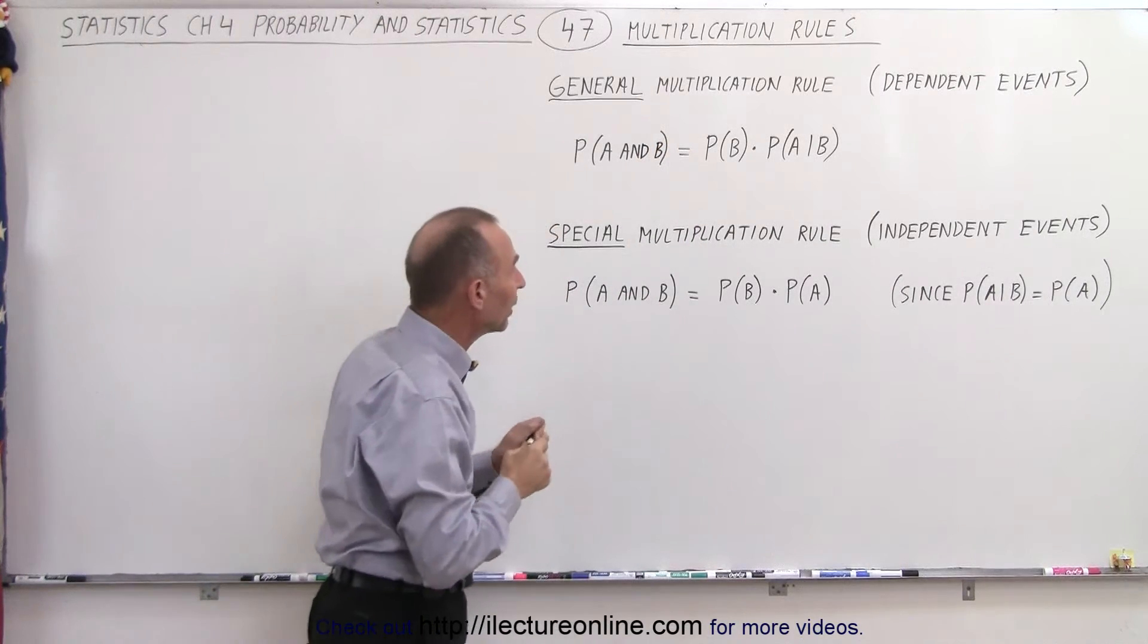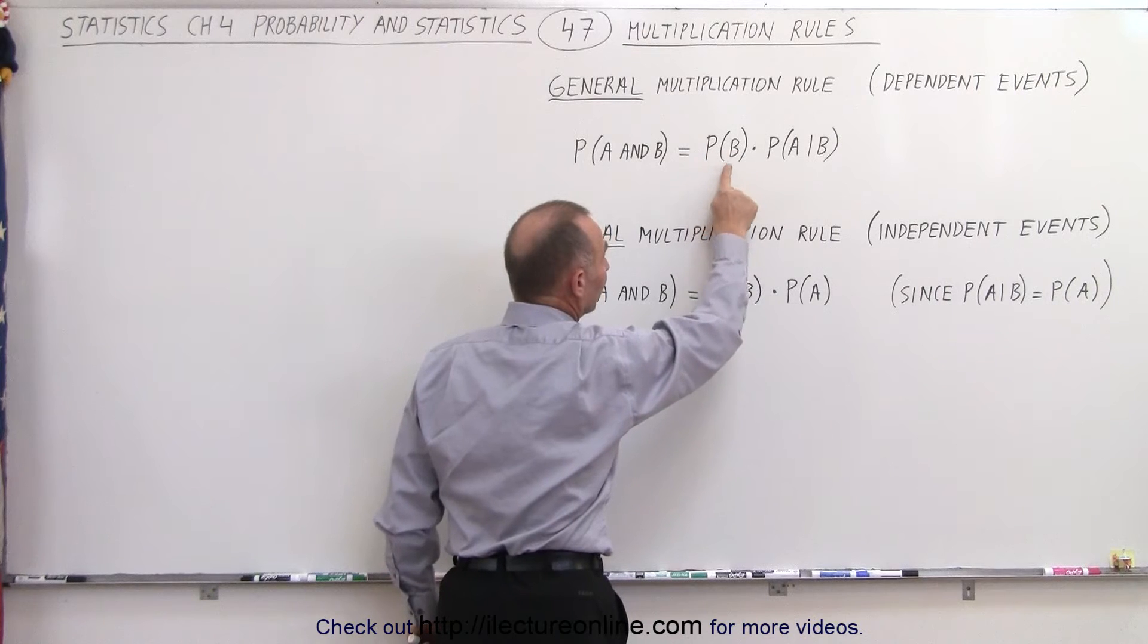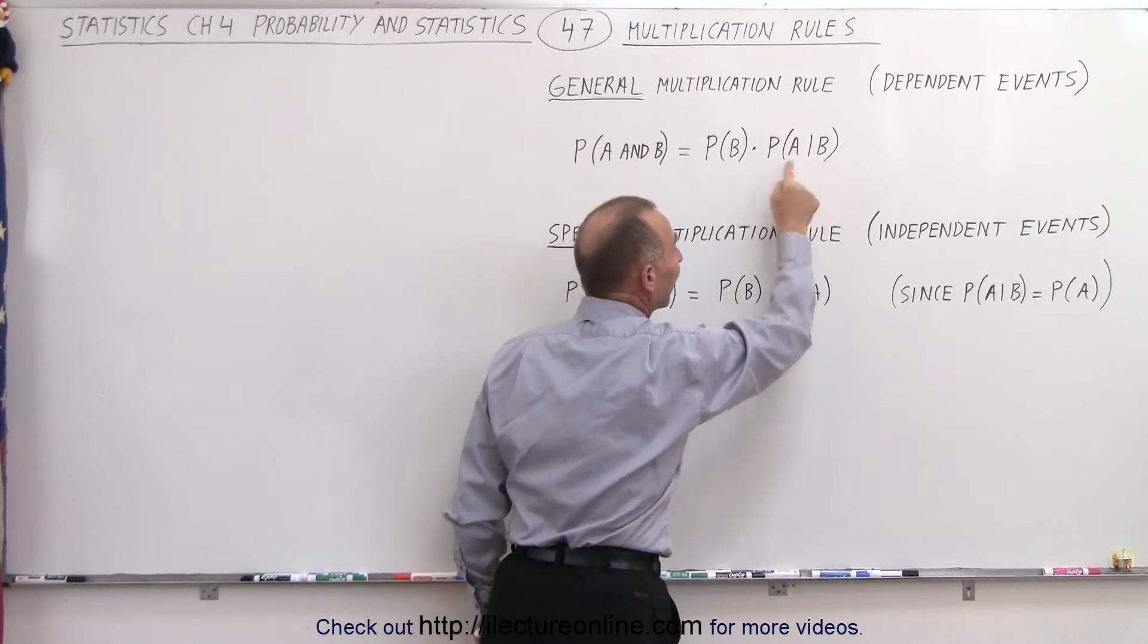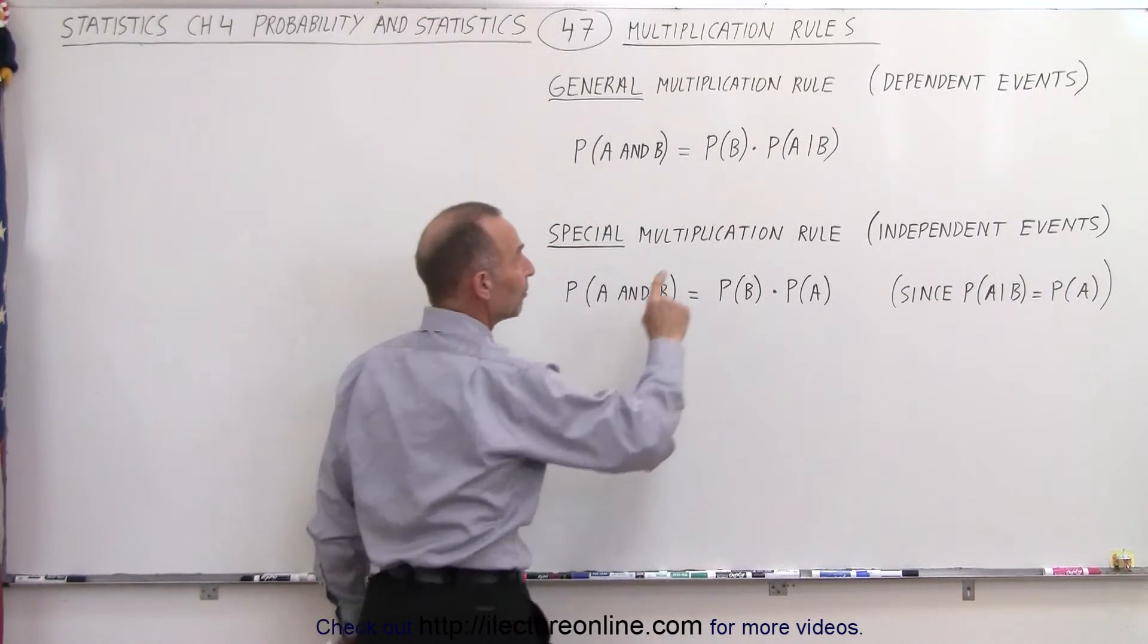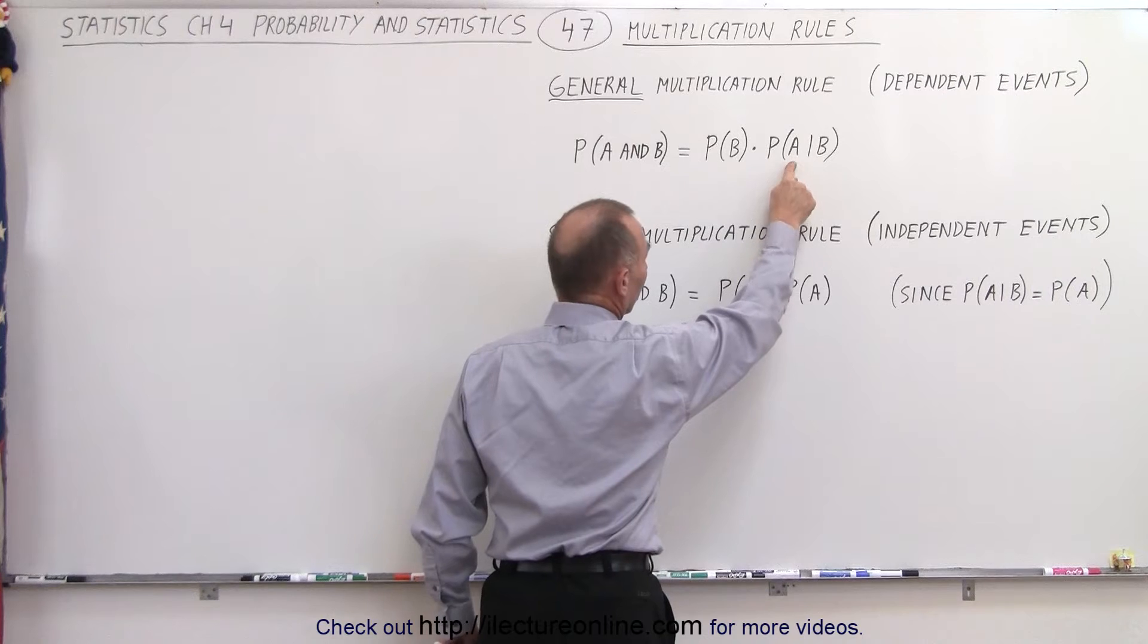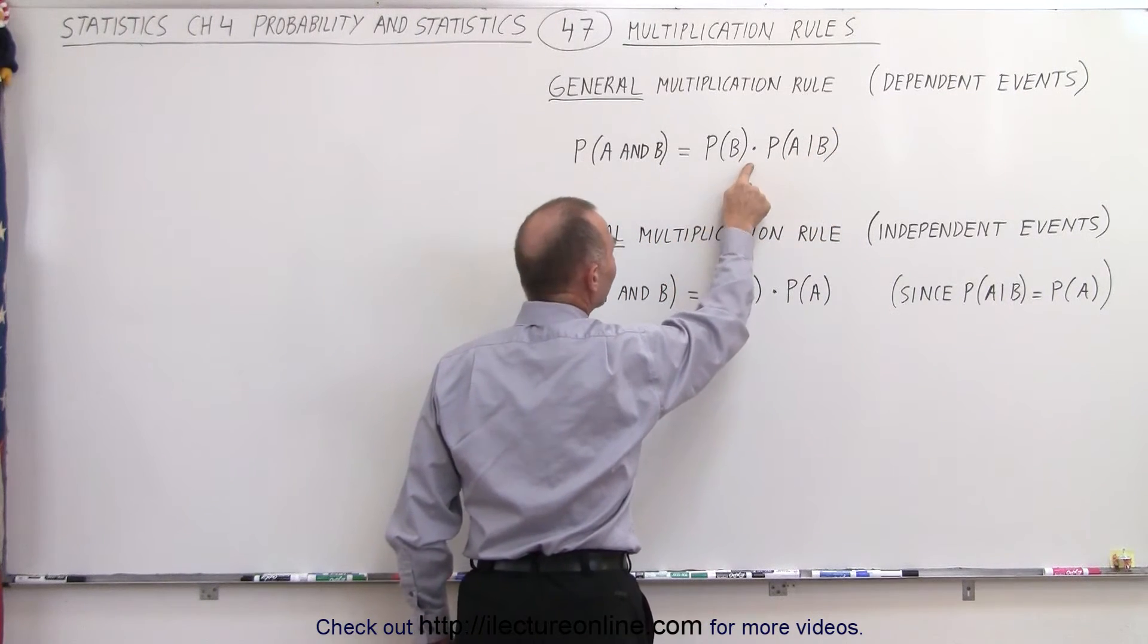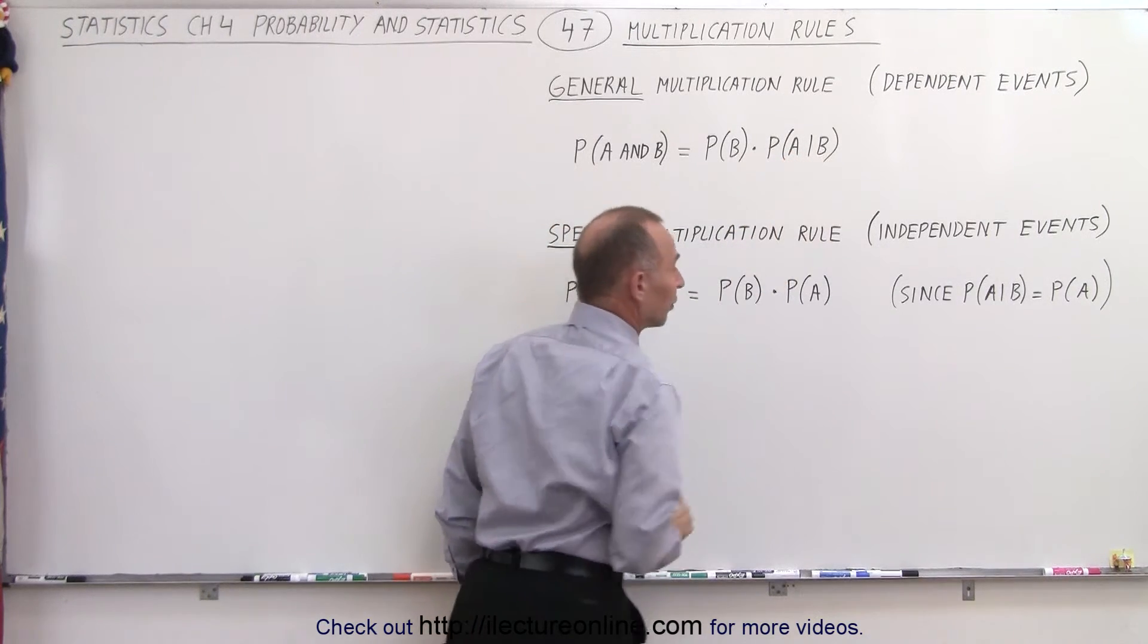this is equal to the product of the probability of B times the probability that A will occur given that B has occurred. We have to take that into account because the probability that A will occur does depend upon the outcome of B. So it's the probability of B times the probability of A given B.